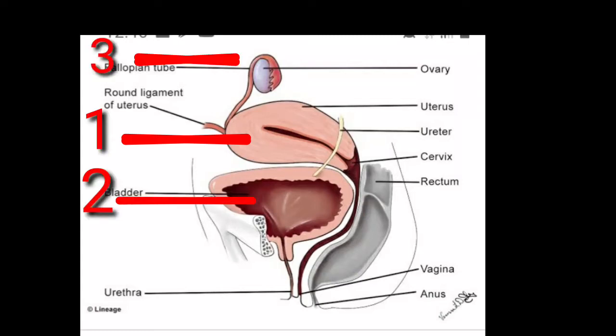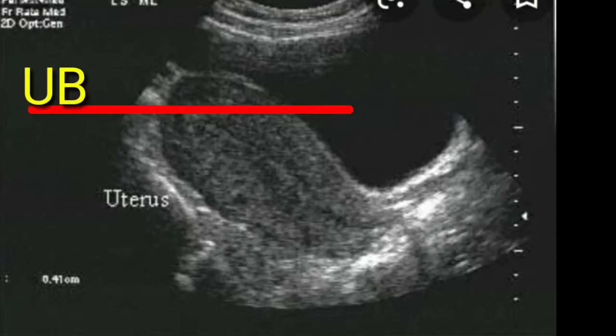Assalamualaikum viewers. Today we will discuss the anatomy of the normal uterus, adnexa, and its measurements. In this picture you can see the uterus on number one, the bladder on number two, and the ovary on number three. This scan picture shows the uterus on the back of the bladder, and its position is anteverted.